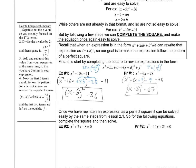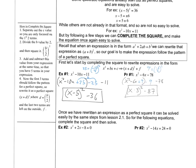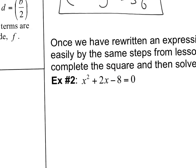Now that we've done the steps a couple times for completing the square, let's apply it to how to solve a problem. Once we have rewritten an expression as a perfect square, it can be solved easily by the same steps from lesson 2.1. So for the following equations we're going to complete the square and then solve.